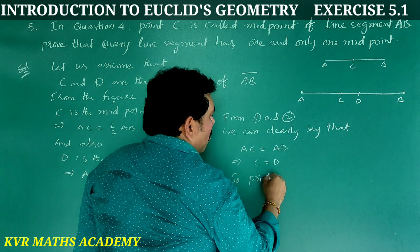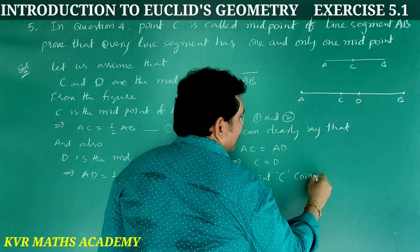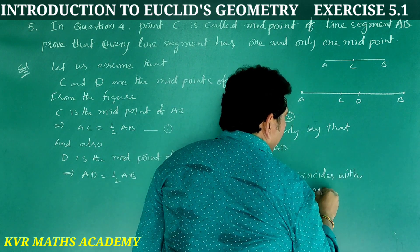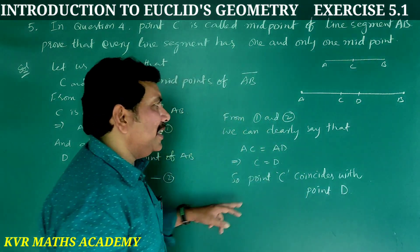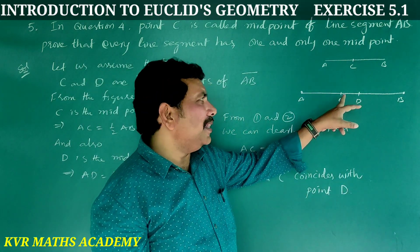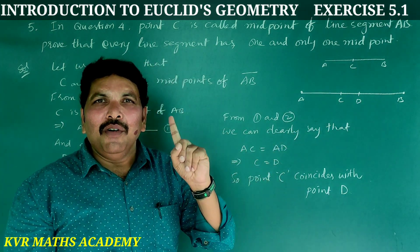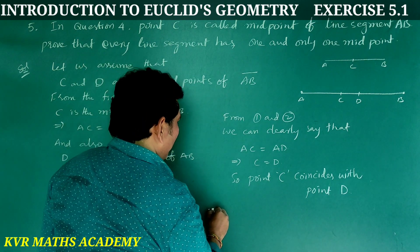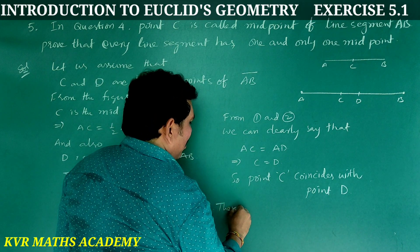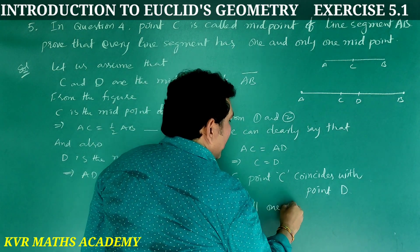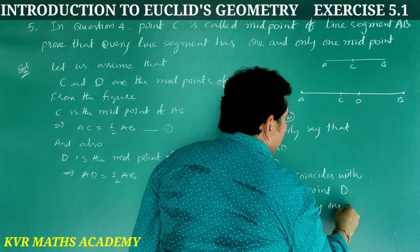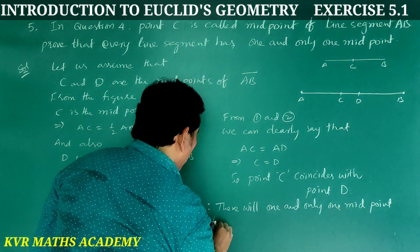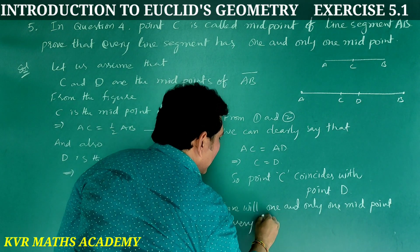Therefore, point C coincides with point D. This means there will be only one midpoint. Therefore, there will be one and only one midpoint for every line segment.